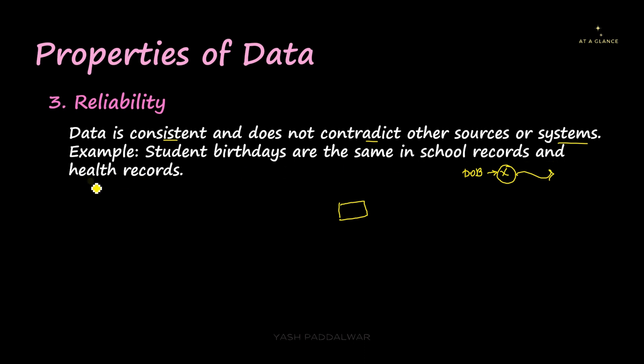Now the same date of birth has to be reflected in all the different databases wherever the student's information is going to be used. For example, in hospital, if that particular student goes in hospital, the same date of birth has to be present in the records of that particular hospital for that particular student. So it should not change anywhere. Universally, it has to be one and the single as well as it has to be precise and reliable. So that is what this property says. Whenever we talk about the quality of data, it has to be reliable.